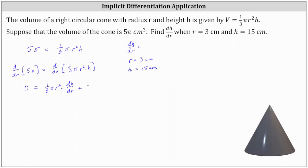And then we have plus the second function of h times the derivative of the first function with respect to r, and the derivative of one-third π r squared with respect to r is two-thirds π r.